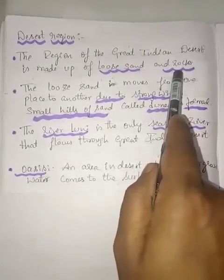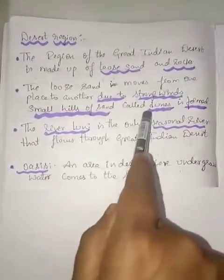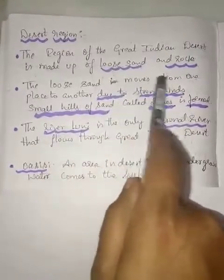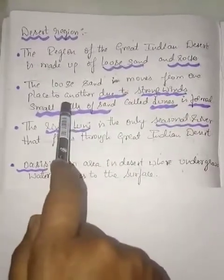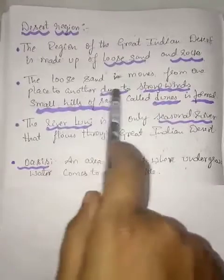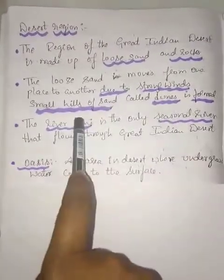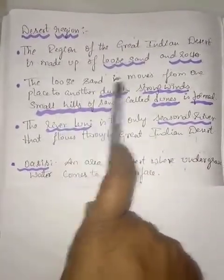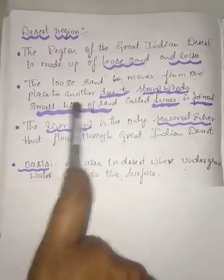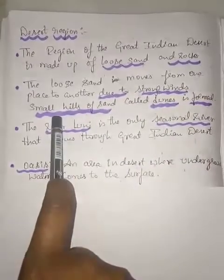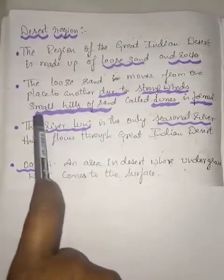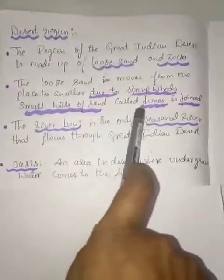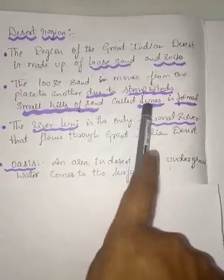This loose sand and rocks will make the dune formation. When the loose sand moves from one place to another, it does not move on its own — it moves when strong wind blows. This makes the loose sand move and form a shape — a hills shape. These small hills of sand are called dunes.